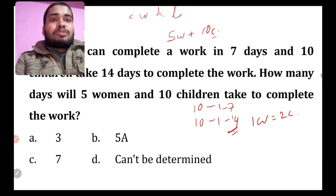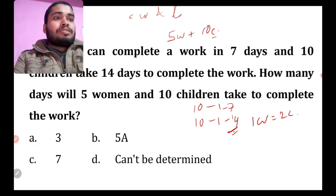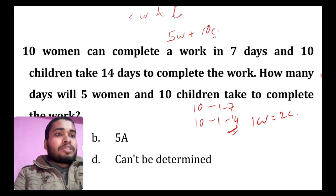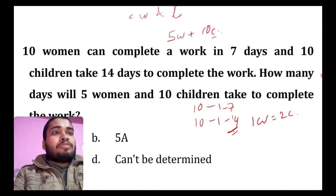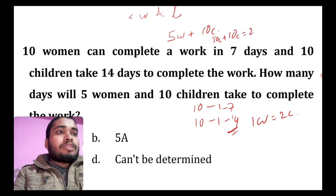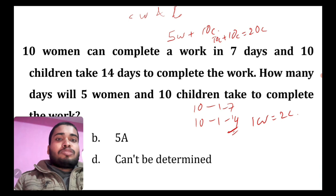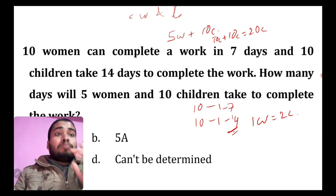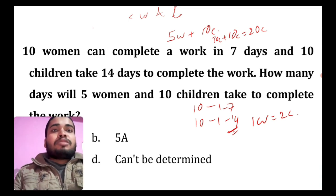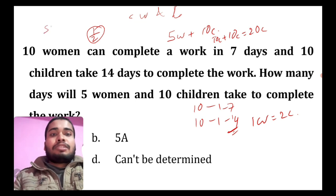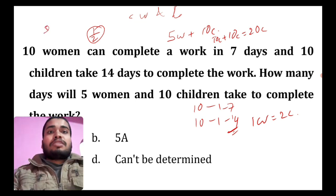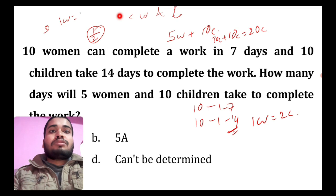One woman can do work twice that of children. When we convert children: 10c plus 10c will be 20c. It would come in fraction — 1 by 2. So 1w is equal to 2c.